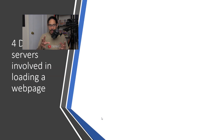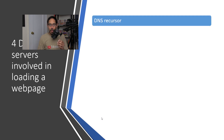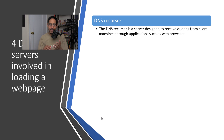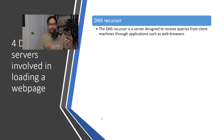There are four DNS servers involved in loading a web page. First, you have a DNS recursor — a server designed to receive requests from client machines through applications such as the web browser. You could think of the DNS recursor as the first step when you open up your browser and request a particular site.